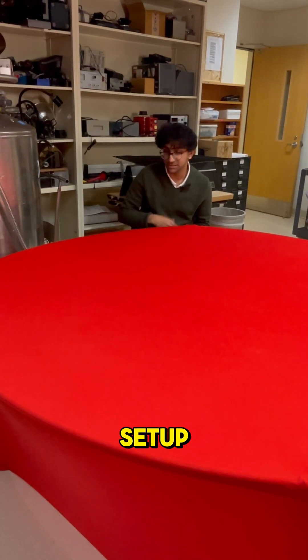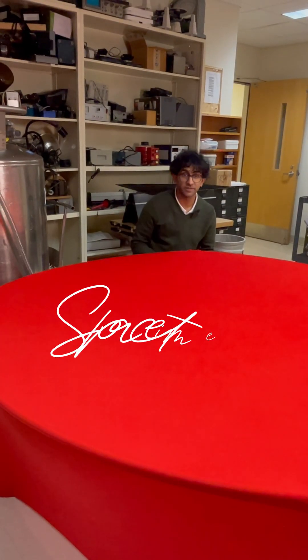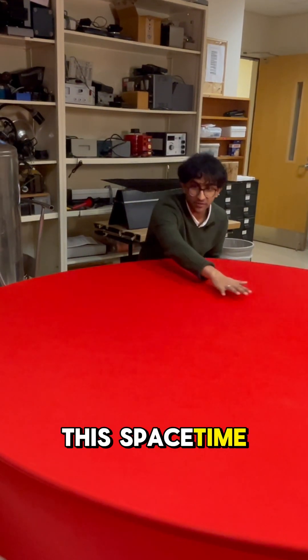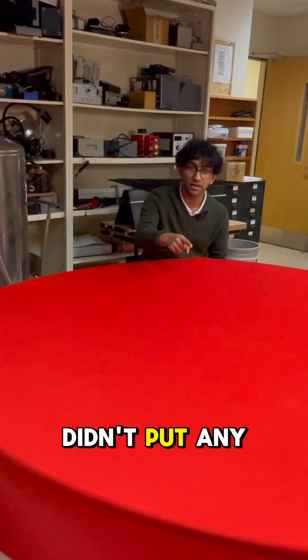Here we have a pretty standard setup, essentially a fabric stretched over a circular frame. We'll use this to model space-time, hence the term space-time fabric. This space-time right now is flat and has no bends or curves in it. That's because we didn't put any mass in it.